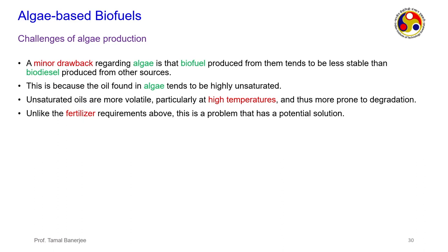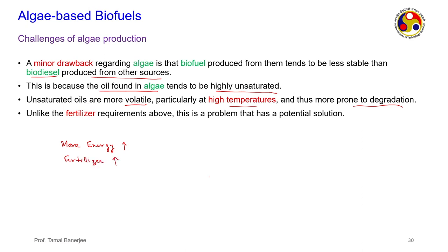A further drawback is that biofuel produced from algae tends to be less stable than biodiesel from other sources because the oil in algae is highly unsaturated — more prone to reaction, more volatile at high temperatures, and more prone to degradation. The two major drawbacks are: high fertilizer/nutrient requirements and unstable unsaturated fuel products. Researchers are working on these issues but the products are currently not stable enough as fuels.